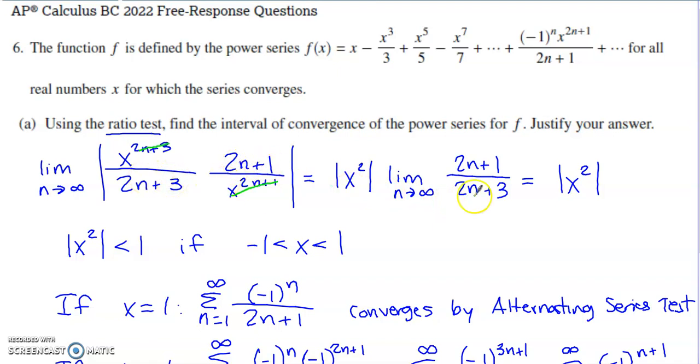And then inside the limit, I'm left with 2n plus 1 over 2n plus 3. And this limit here is going to be 1, so my end result is going to be the absolute value of x squared times 1. Well, when is the absolute value of x squared less than 1? When is x squared less than 1? If you drop the absolute values, when you solve that, you should be able to identify the interval negative 1 to 1.